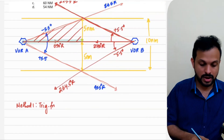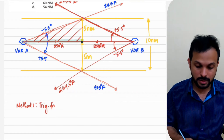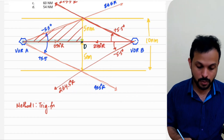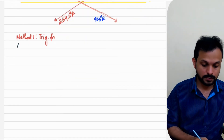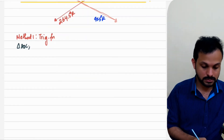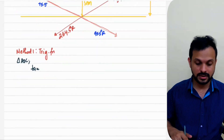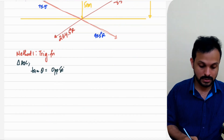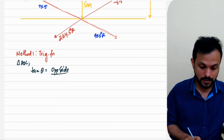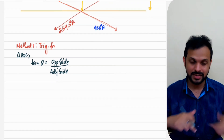Let's solve this using both methods. Method one is trigonometry using the trig function. We're looking at triangle AOC. We can apply the function tan(θ) because we're dealing with opposite and adjacent sides. So tan(θ) equals opposite divided by adjacent — the same method used in the previous question.